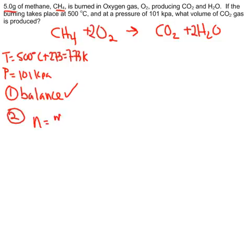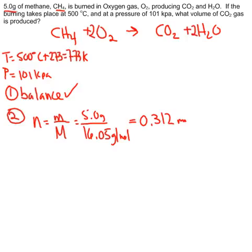Little n equals little m over big M. We take the 5 grams divided by the molar mass of CH4, so that's 1 carbon and 4 hydrogens, which gives us 16.05 grams per mole. When we plug those into the formula, we get 0.312 moles.